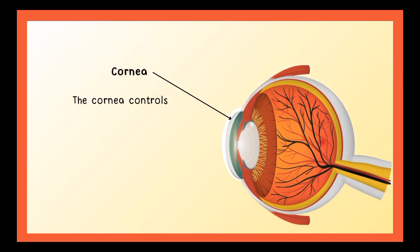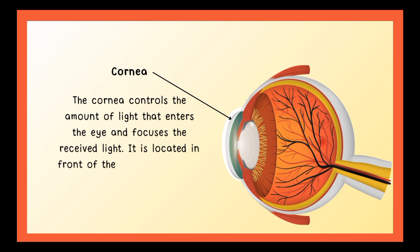Next is the cornea. The cornea controls the amount of light that enters the eye and focuses the received light. It is located in the front of the eye, covering the pupil, iris, and anterior chamber.